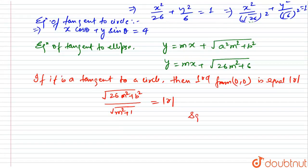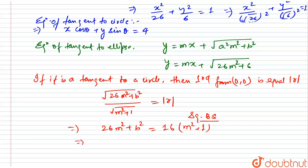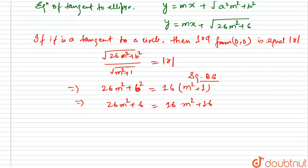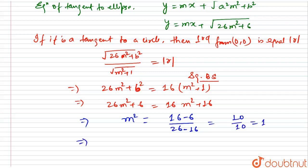Squaring both sides, this equation becomes 26m² + 6 = r²(m² + 1). Since r² = 16, this gives 26m² + 6 = 16m² + 16. Solving, 10m² = 10, so m² = 1, giving m = 1.